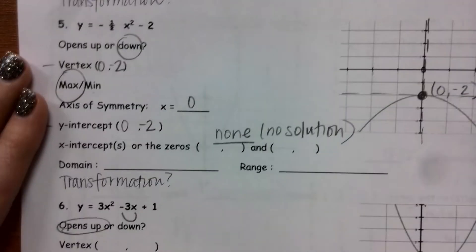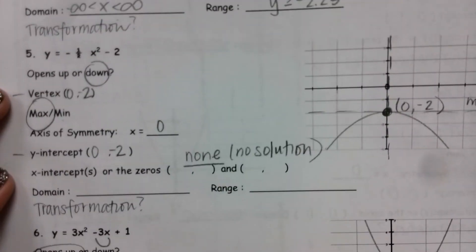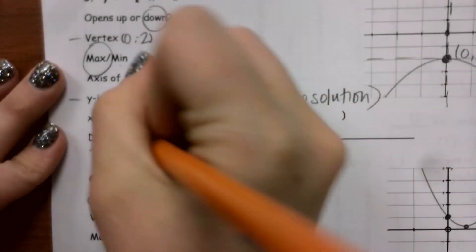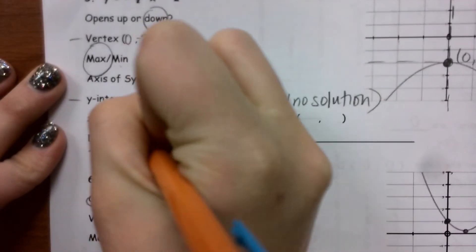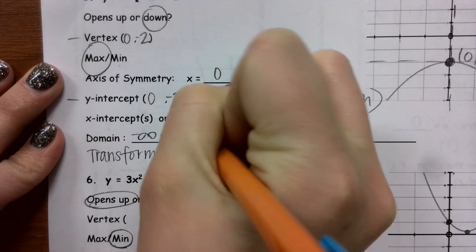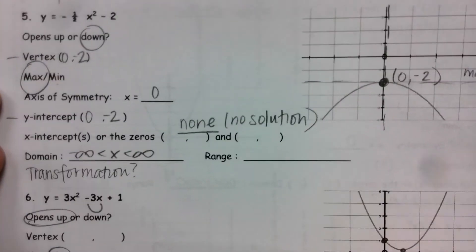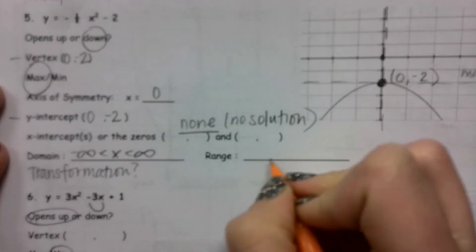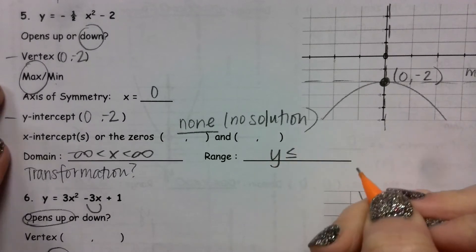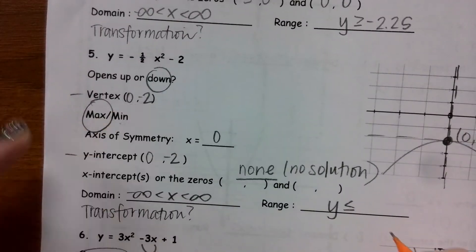Number five. My domain is all real numbers. My range is going to be, because the parabola is opening down, y is less than or equal to the y value of my vertex, which is negative 2.